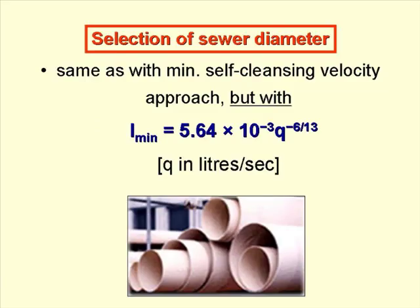We select the sewer diameter in exactly the same way as we did when we used the minimum self-cleansing velocity approach, but we use the expression i_min equals 5.64 times 10 to the minus 3, times q to the minus 6 over 13, where q is in litres per second, because this is the equation based on a minimum tractive tension of 1 pascal.